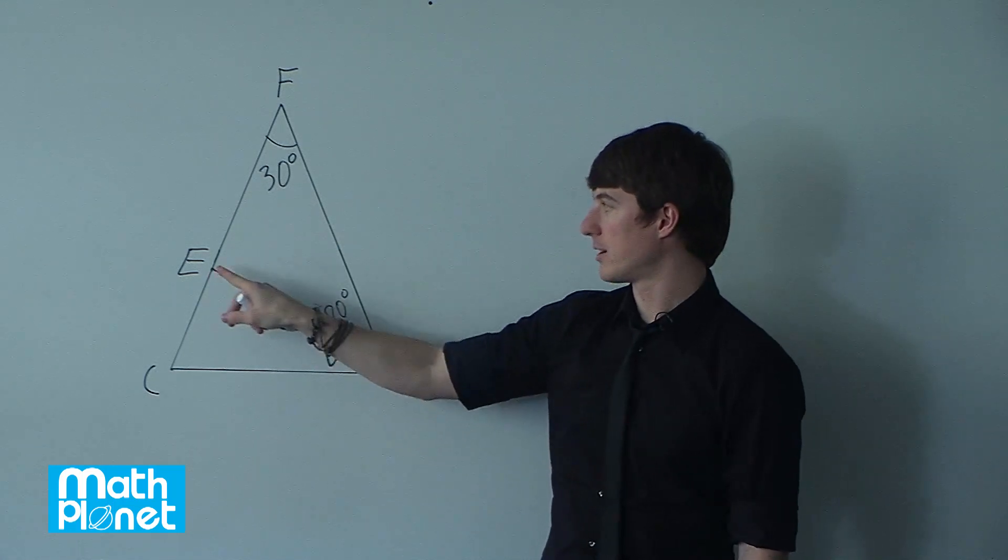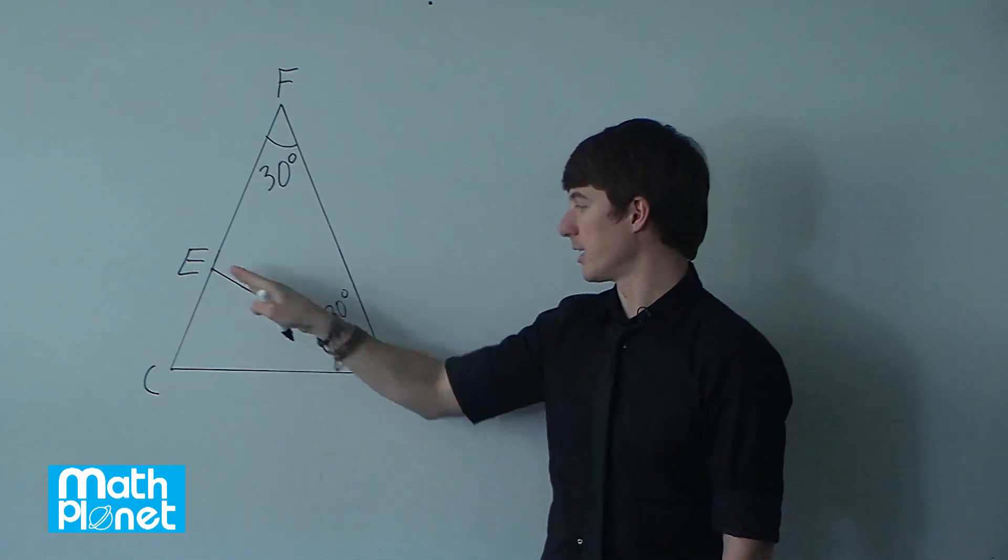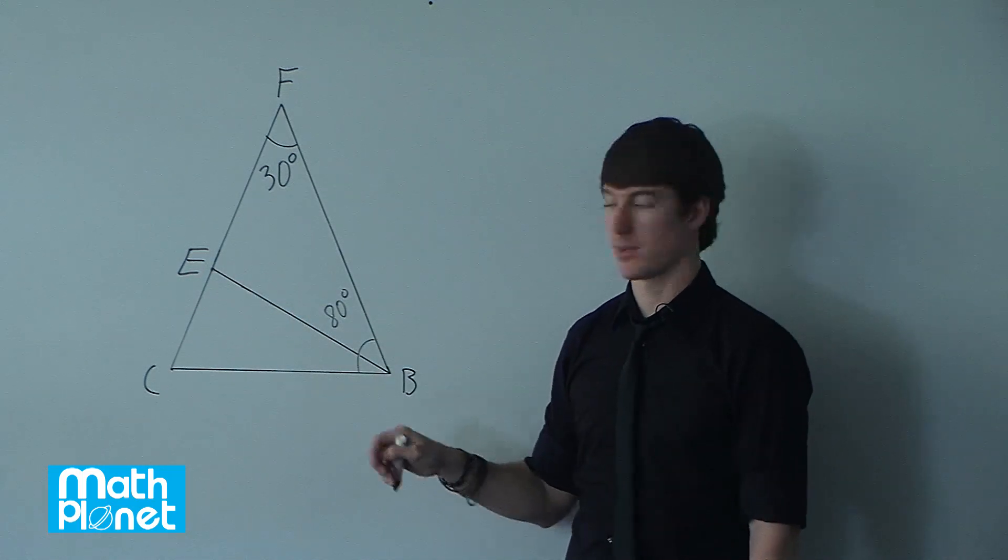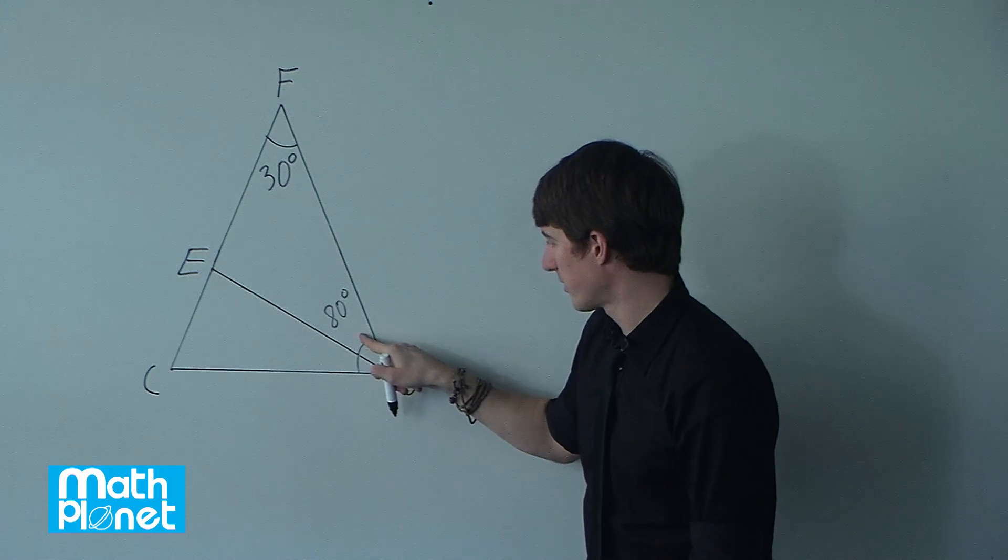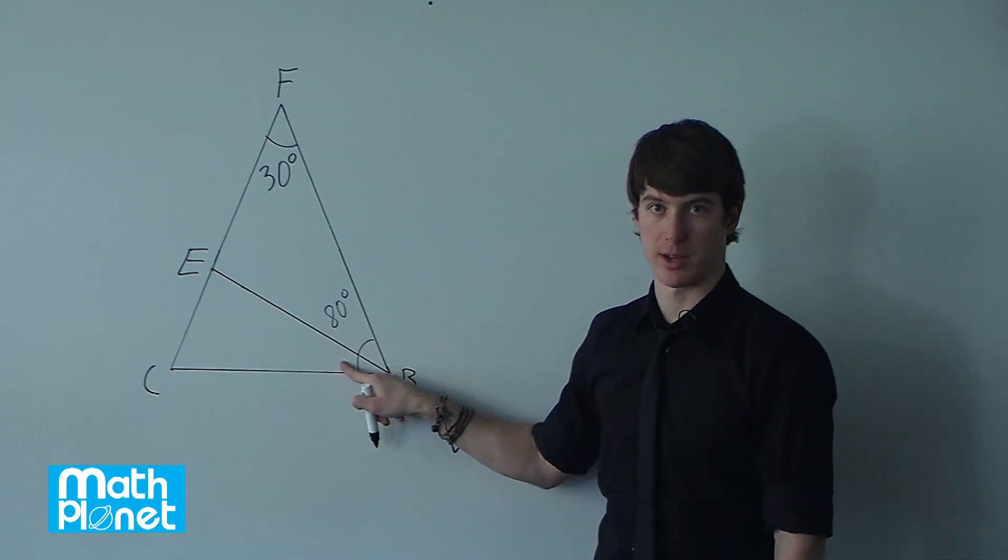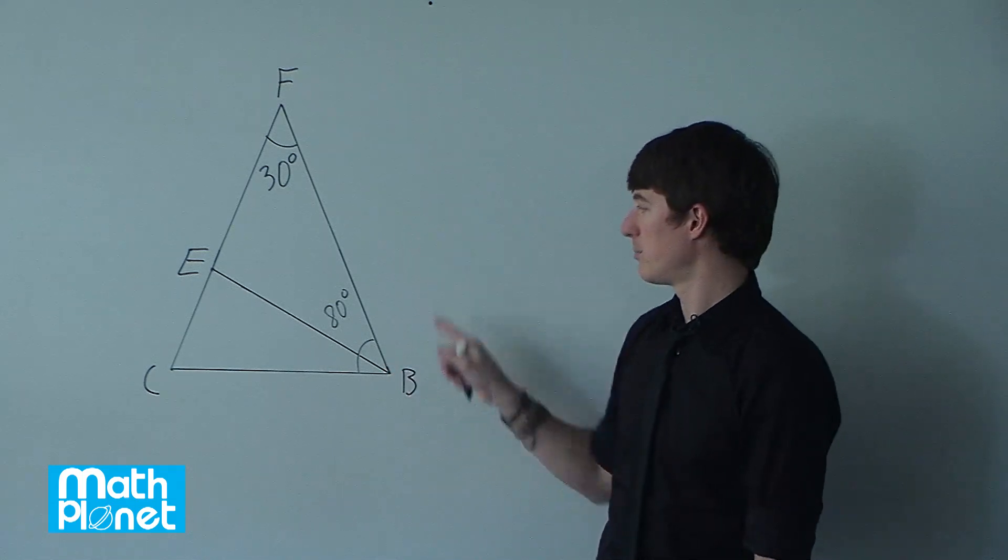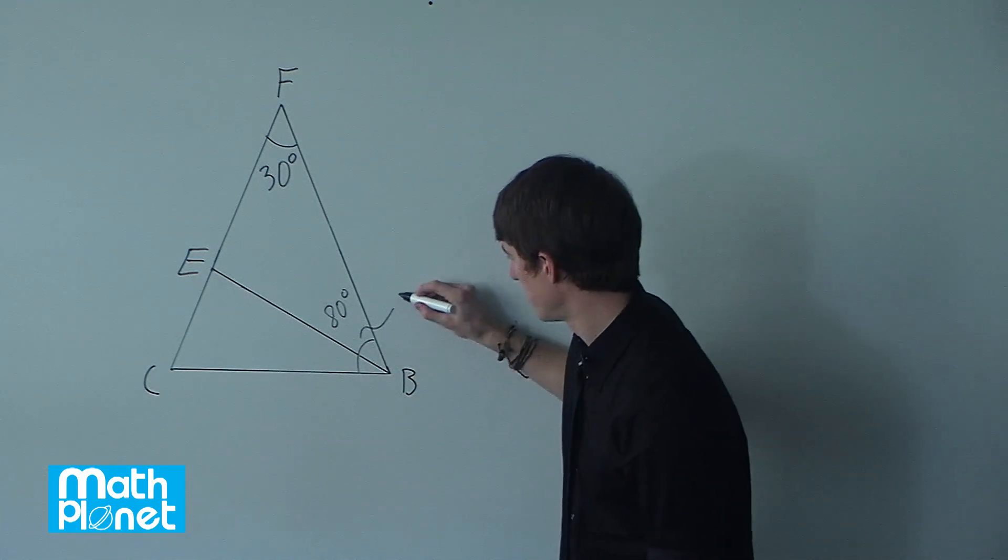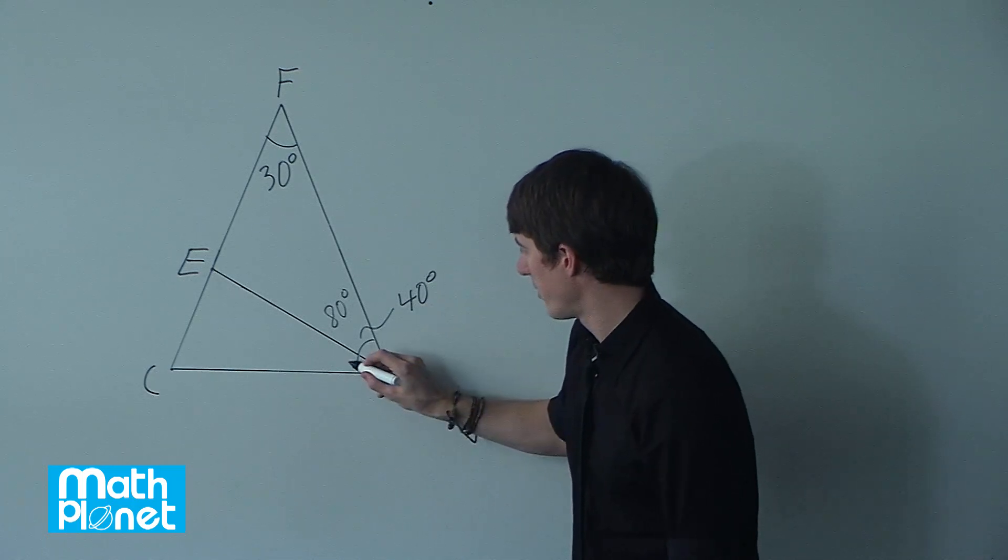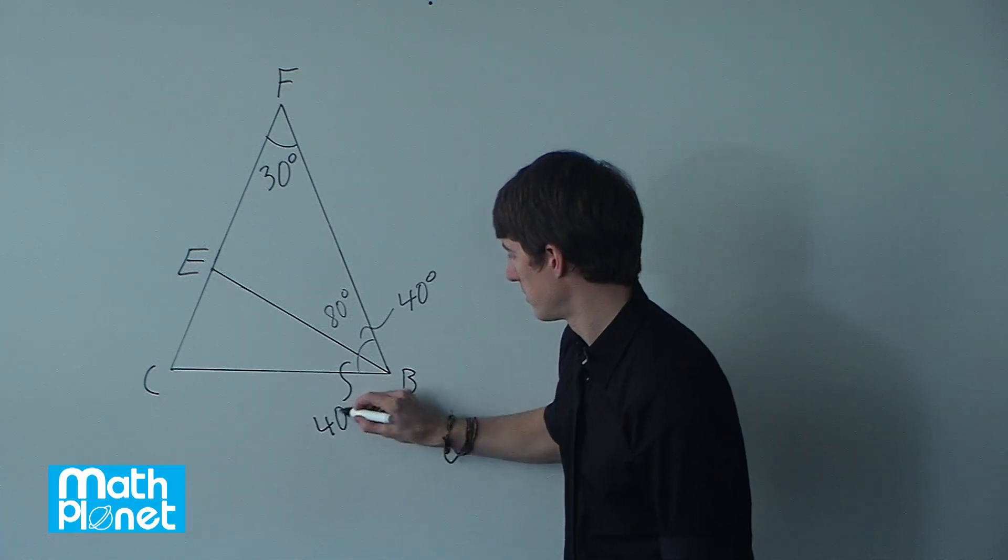We know that actually E, this line here BE, bisects this as well. So we know that this and this are the same angle. That's what this means, to bisect this angle FBC. So this here is 40 and this here is 40 degrees.